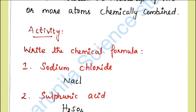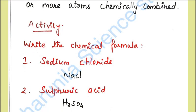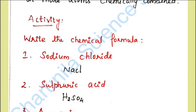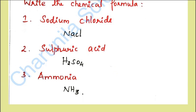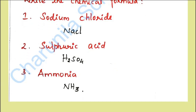Now we have activities. One compound and its chemical formula: sodium chloride — sodium is Na, chloride is Cl, so sodium chloride is NaCl. Next is sulfuric acid. Sulfuric acid's chemical formula is H2SO4. Please write the chemical formula in the comment box.